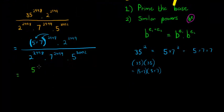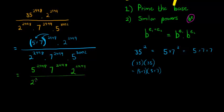So, this is 5 to the power of 2998, 7 to the power of 2998, obviously they're being multiplied, times 2 to the power of 2999, all divided by 2 to the power of 2998, times 7 to the power of 2999, times 5 to the power of 3002.